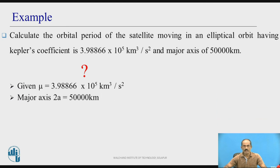What is given? μ = 3.98866 × 10⁵ km³/s². Major axis 2A = 50,000 kilometers.